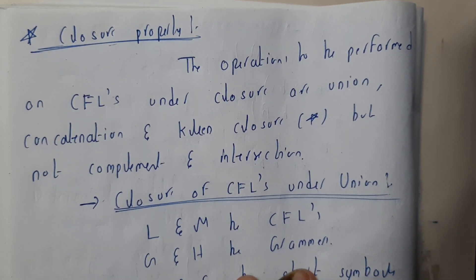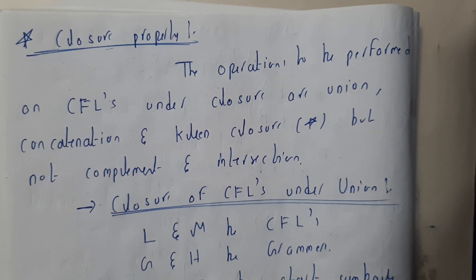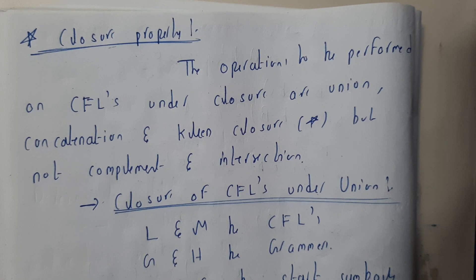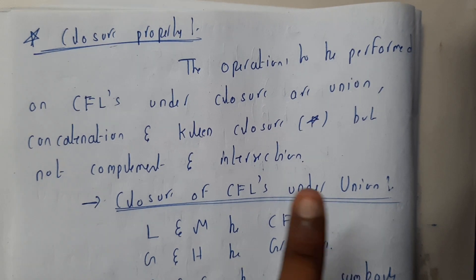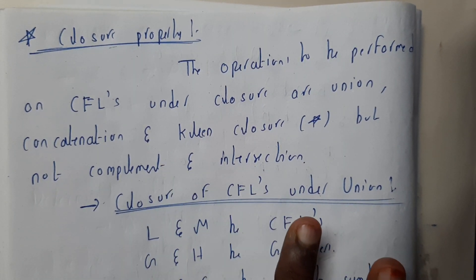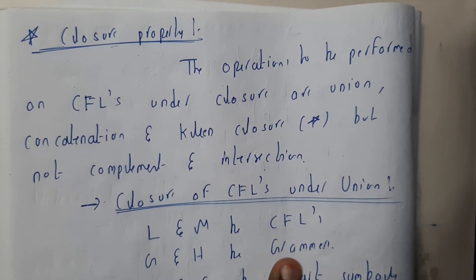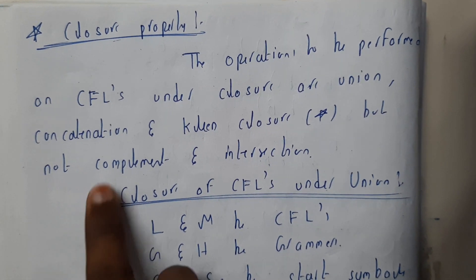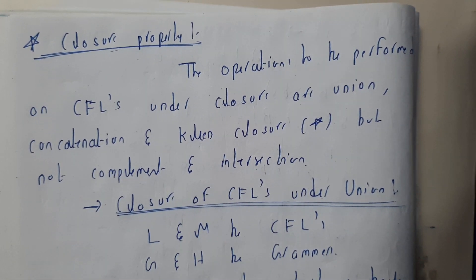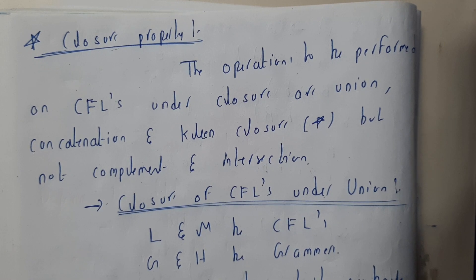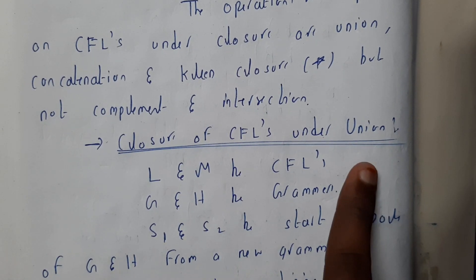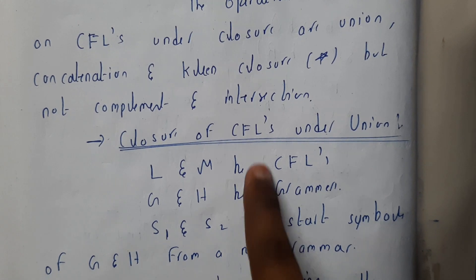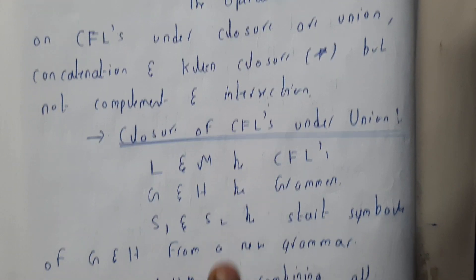Hello guys, we are back with our next tutorial. In this tutorial, let us go through closure properties. The operations to be performed on context-free languages — union and concatenation are closure properties, while complement and intersection are non-closure properties.